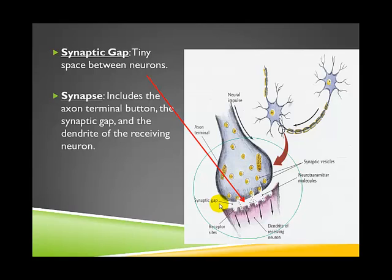There is ever so tiny a gap between them. In order for these neurons to be able to communicate with one another, they have to use some kind of chemical communicator that can cross this gap and go to another neuron. So the sending end of a neuron — the axon terminal — plus the gap, plus the receiving end of another neuron: these three parts together make up what we call the synapse.